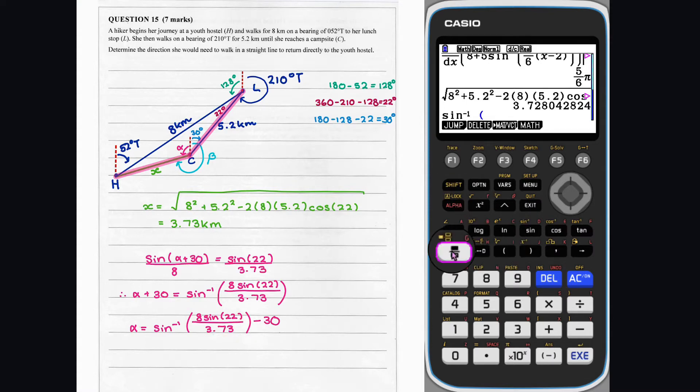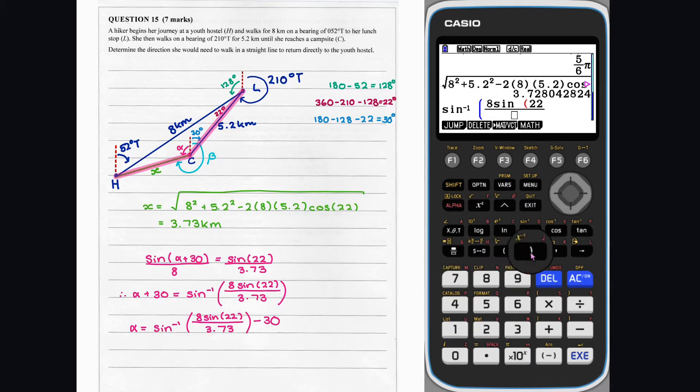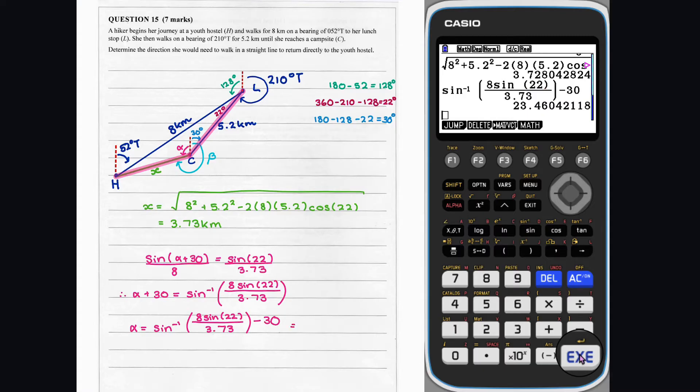So let's do this. Thus, beta is equal to 360 take 23.5, which is 336.5 degrees. So, the hiker must walk 336.5 degrees true to get back to the hostel.